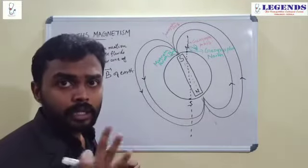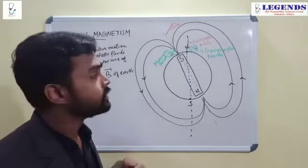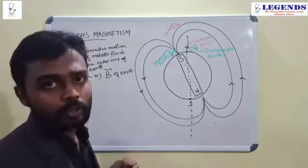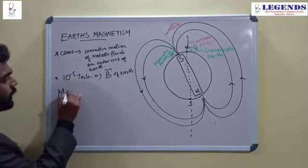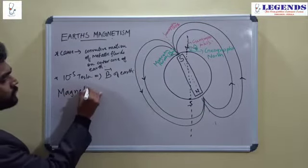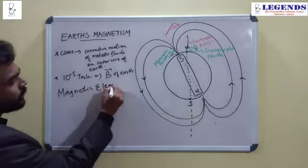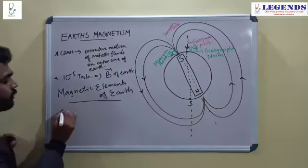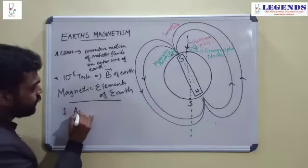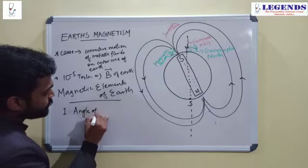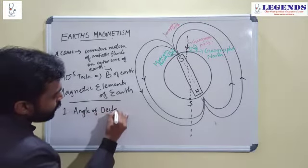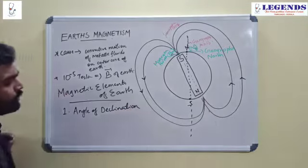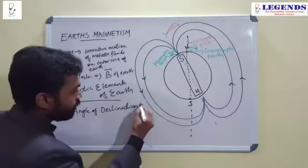There are three components responsible for the magnitude and direction of the magnetic field of Earth. They are called the magnetic elements of Earth. The first one is angle of declination, I call it D.